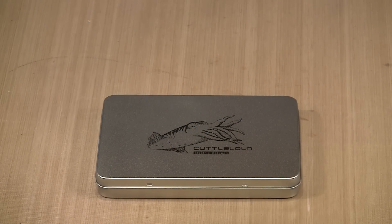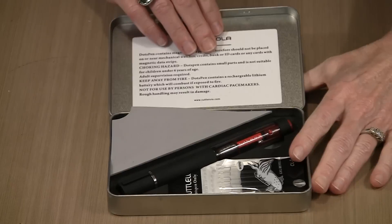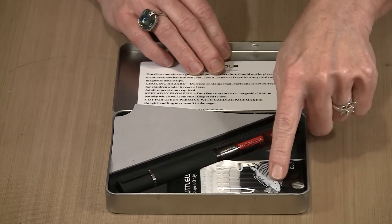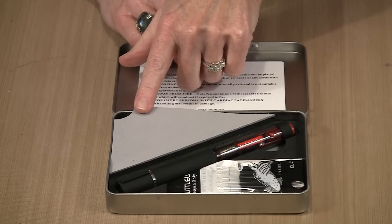The Dots pen is packaged in this nice sturdy metal box. When you flip open the lid, you'll see inside the pen, black ink refills. In the back here is your charging cable, and we'll talk about that in one second.